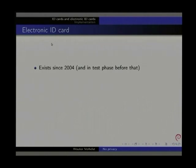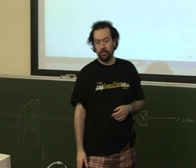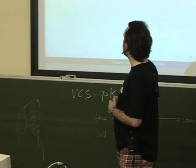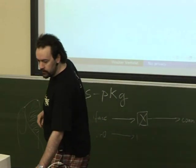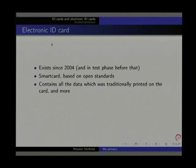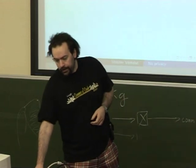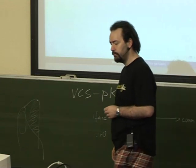Electronic ID cards — we have those since 2004, with a test phase before that. They are smart cards based on open standards. It's not a totally open card, but the bits that matter are completely open. It contains all the data which was traditionally printed on ID cards, and there's some more stuff such as certificates and crypto. But it has some new privacy issues of its own, and I'm personally not very happy with that.